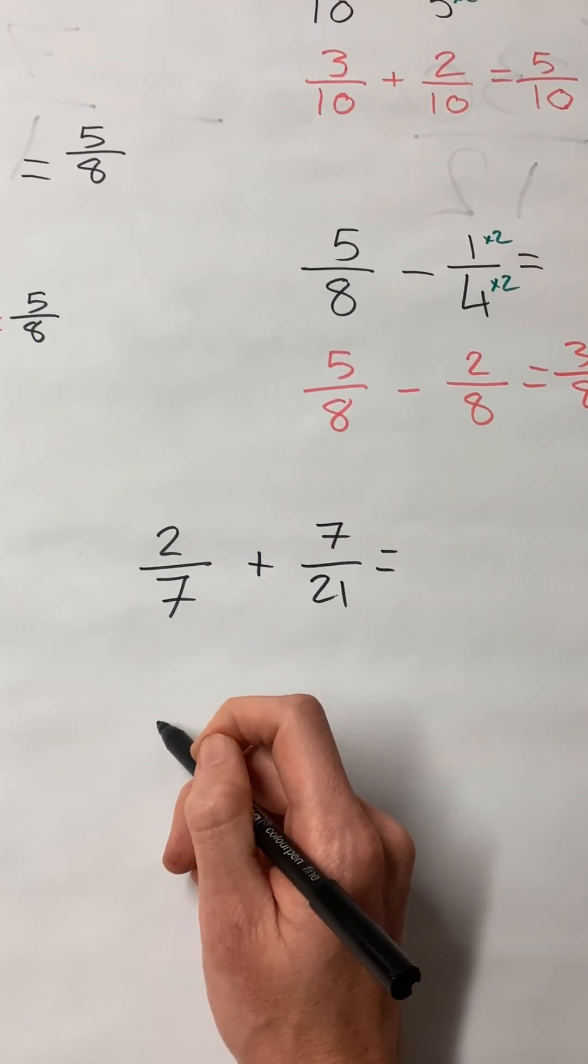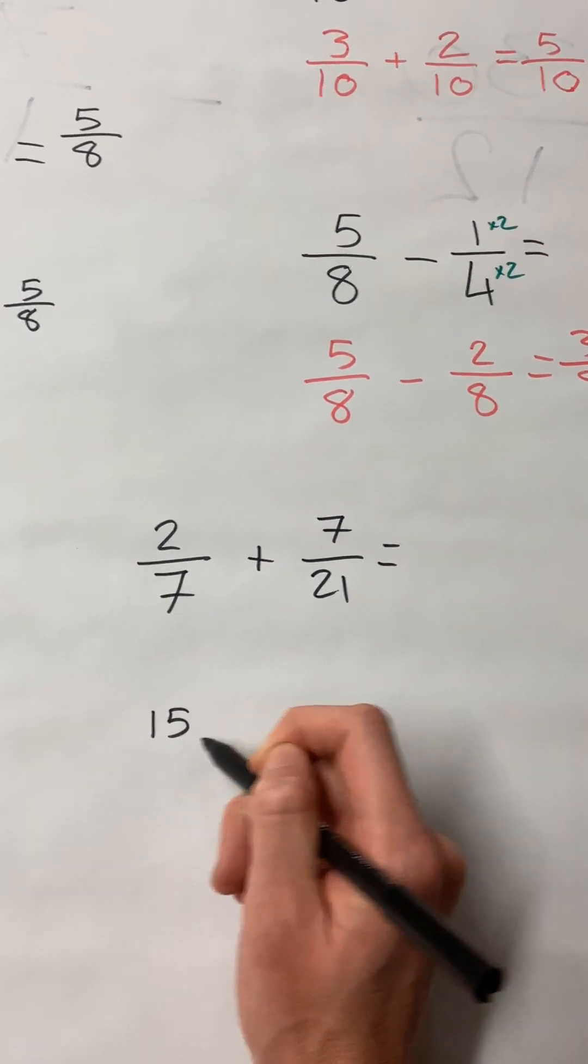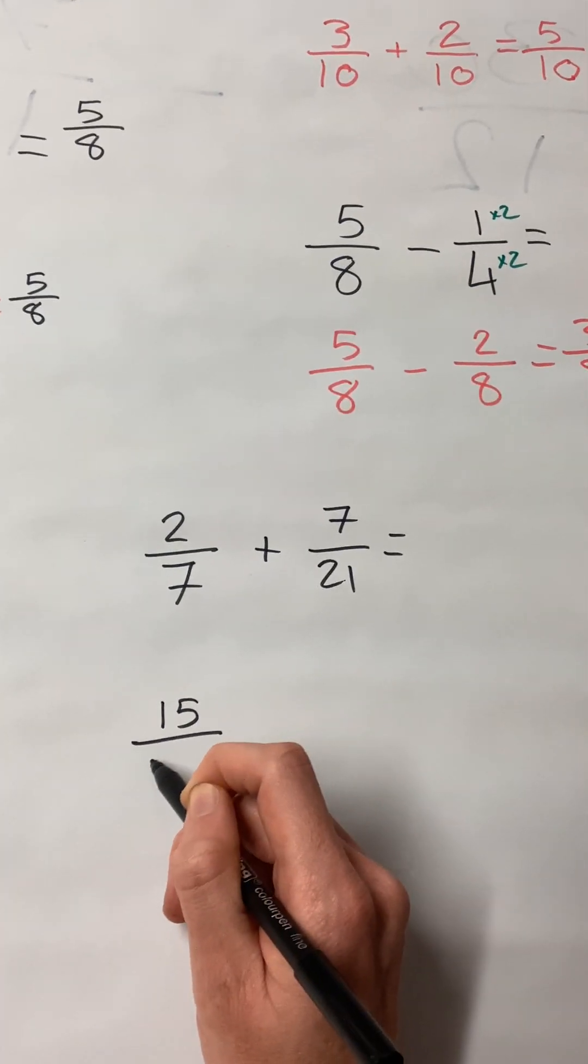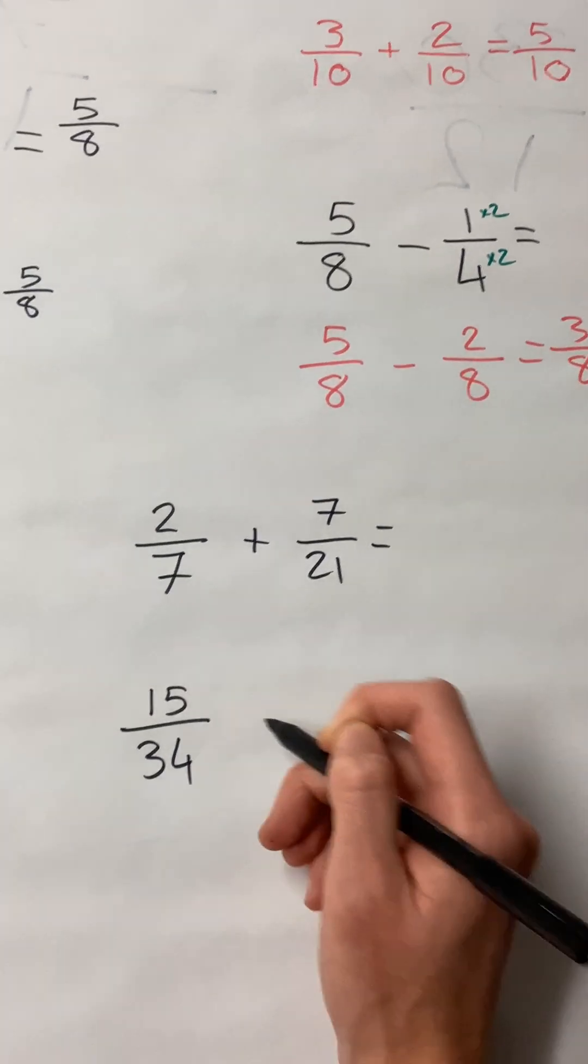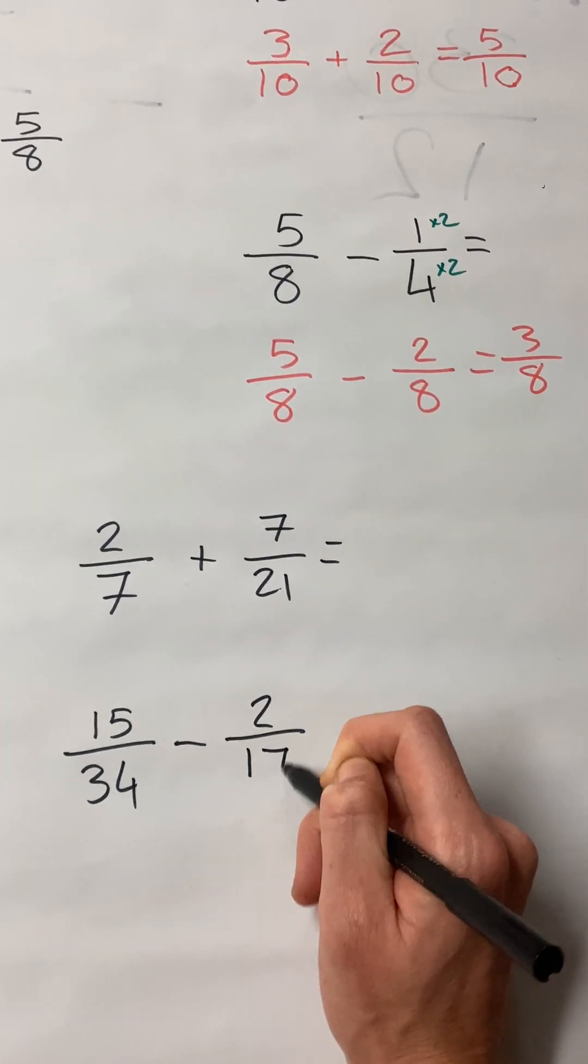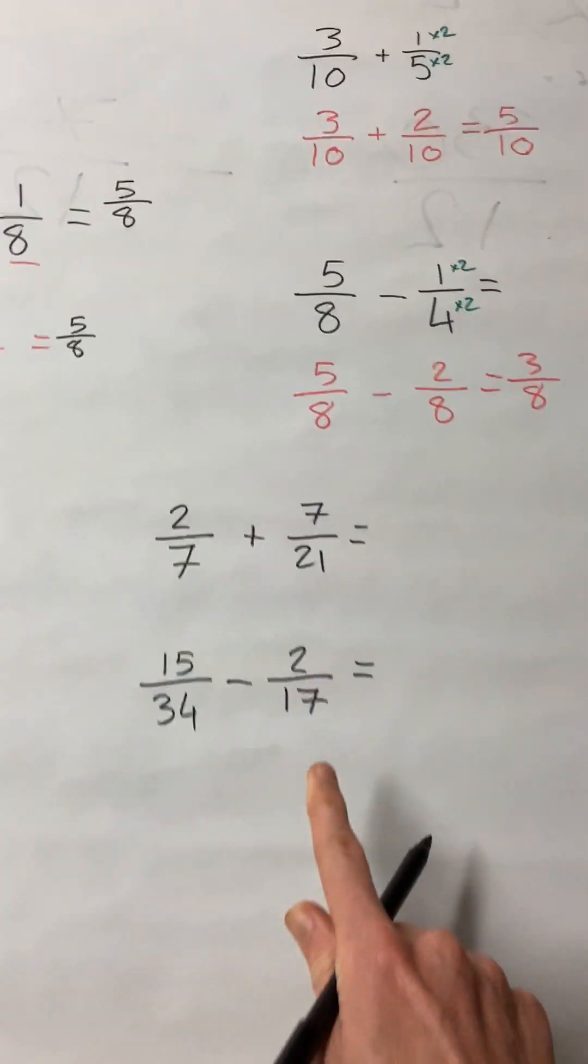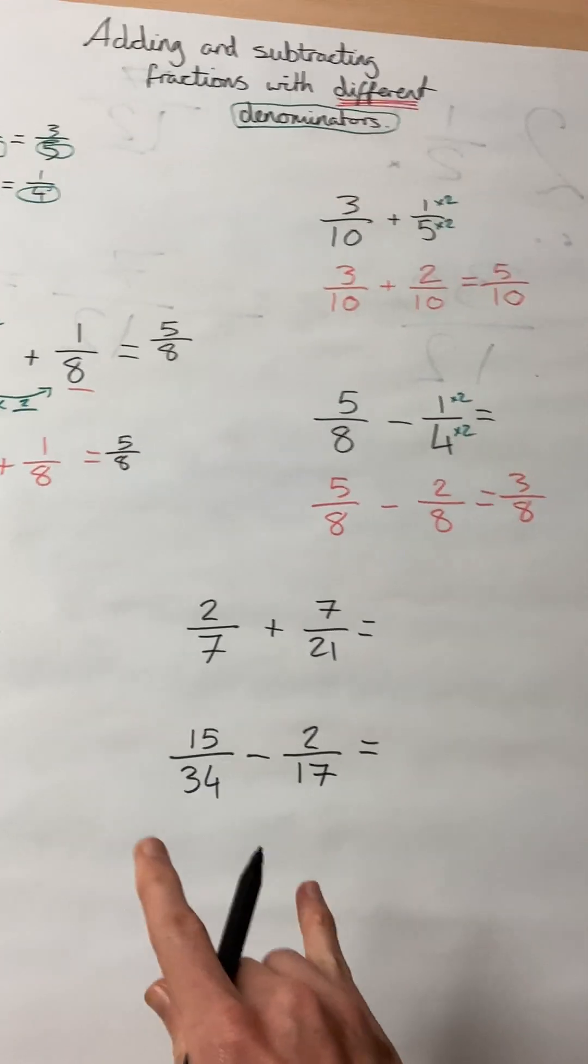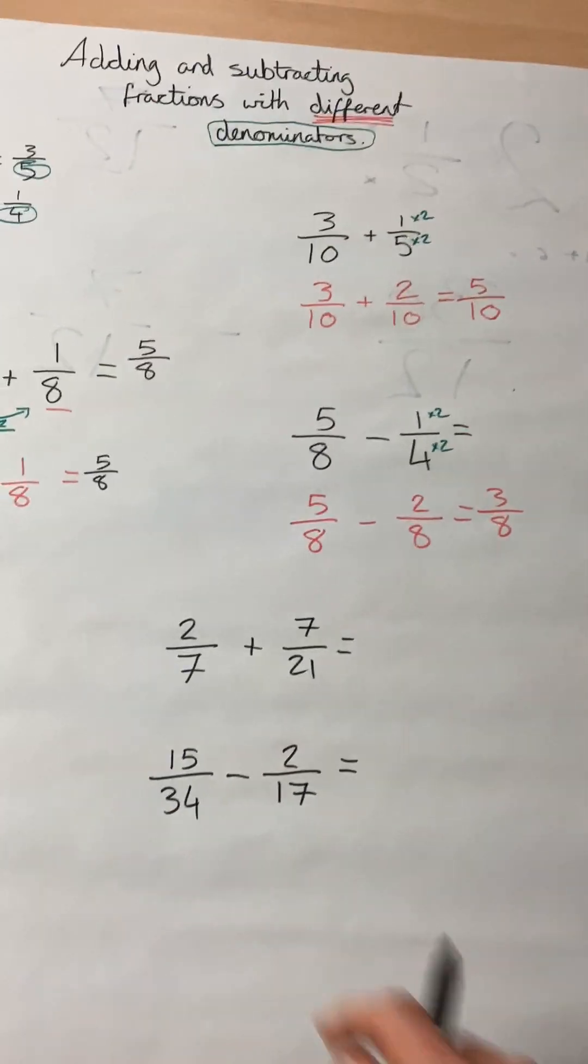What about fifteen-thirty-fourths minus two-seventeenths? Much, much harder, but you can do it by making them the same.